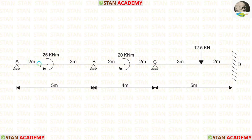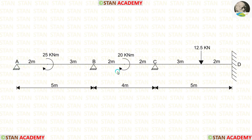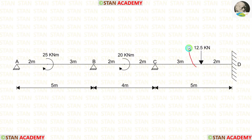In span AB, there is a concentrated moment of 25 kNm acting at 2 m from point A. In span BC, there is a concentrated moment of 20 kNm acting at the center. Both moments are acting in the clockwise direction. In span CD, there is a concentrated load of 12.5 kN acting at 3 m from point C.